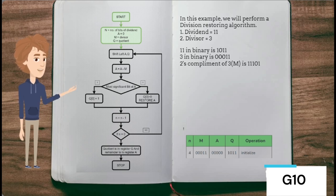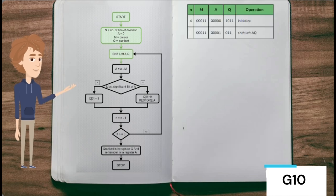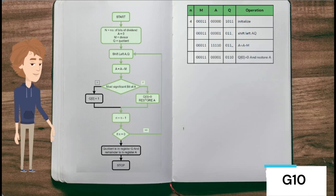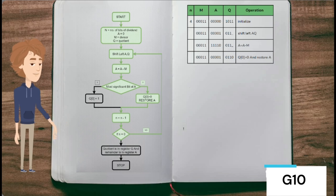In the next step, the content of registers A and Q is shifted left as a single unit. Then the content of register M is subtracted from A and the result is stored in A. The most significant bit of A is checked — if it is 1, the least significant bit of Q is set to 0 and the value of register A is restored. The counter N is then decremented. Since N is not 0, the loop continues.